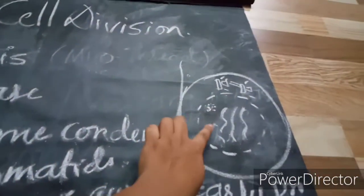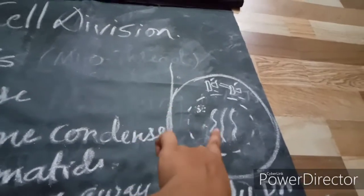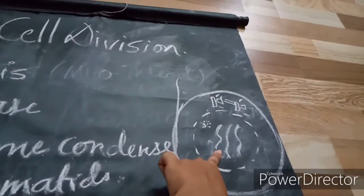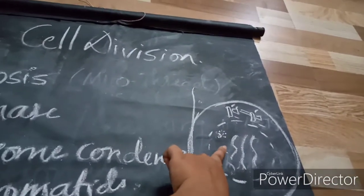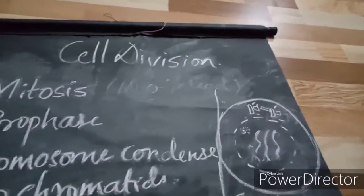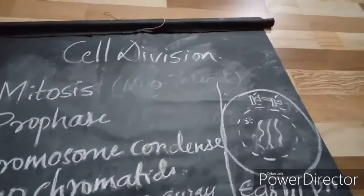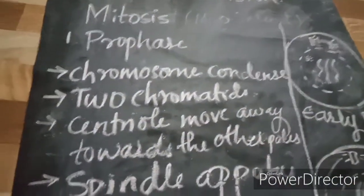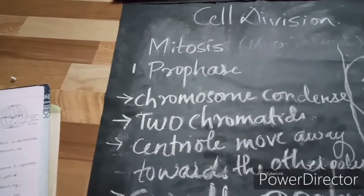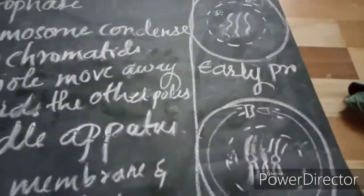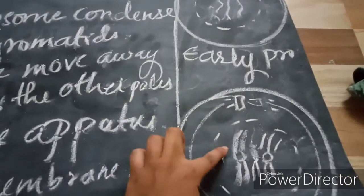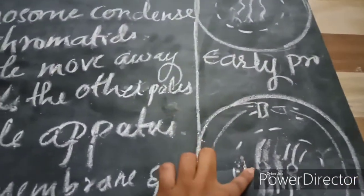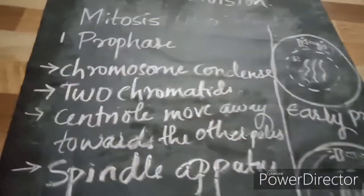In the first diagram showing early prophase, the chromosomes are thin and thread-like, hence they are known as chromatin. These chromatin threads start to condense to become thick and short. Each chromosome is formed of two chromatids, and the two chromatids of the chromosome are connected by a centromere.